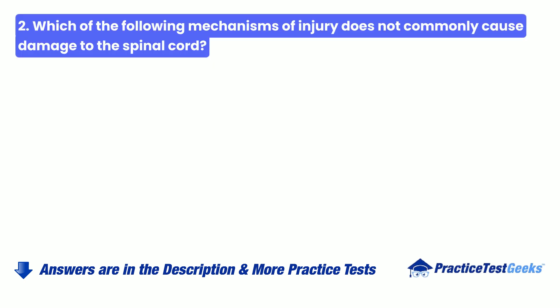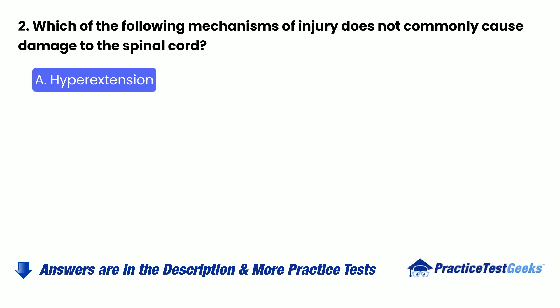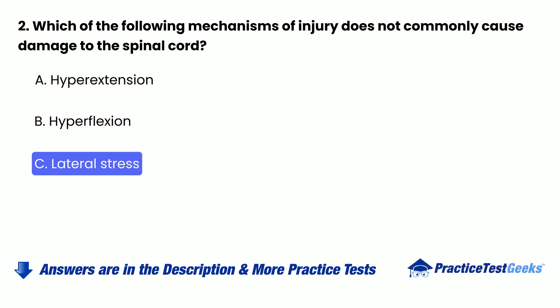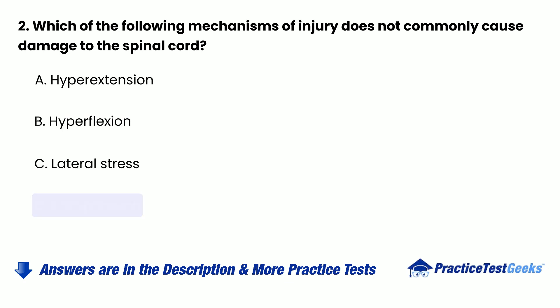Question 2: Which of the following mechanisms of injury does not commonly cause damage to the spinal cord? A. Hyperextension. B. Hyperflexion. C. Lateral stress. D. Compression.